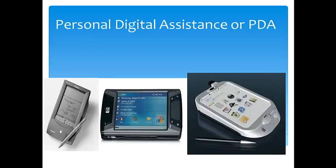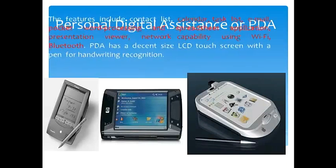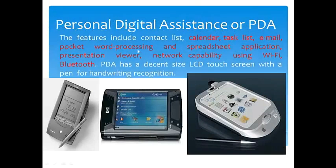Next comes personal digital assistant, PDA. The features of PDA include calendar, task list, email, word processing, spreadsheet, applications, presentation, and network capabilities including Wi-Fi. The PDA has a decent-sized LCD screen. Nowadays, PDA comes with many options where we can work with Word, presentations, PowerPoint, check emails, and connect with various types of networks.